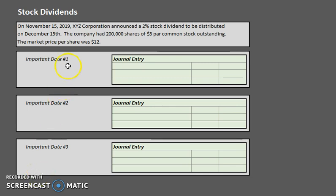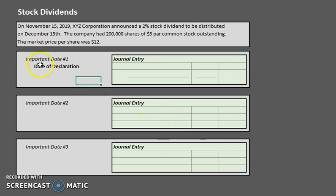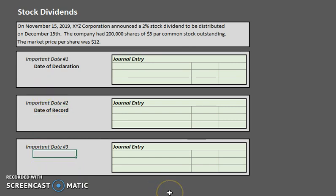When we talk about dividends, we have three important dates, which we went over briefly in the cash dividends video. The first is the date of declaration — basically the day it's announced. The second is the date of record, typically the halfway point, which identifies who is entitled to the dividend. The third, since we're dealing with stock dividends, is called the date of distribution rather than date of payment, because we are distributing stock rather than paying cash.